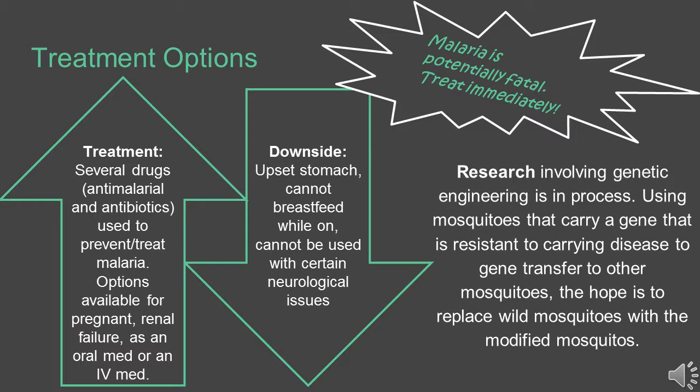Because malaria is potentially fatal, it needs to be treated immediately. There is research involving genetic engineering right now, using mosquitoes that carry a gene that is resistant to carrying diseases like malaria. By using this genetic engineering, the hope is to transfer that gene into new mosquitoes that will replace wild mosquitoes with these modified mosquitoes.